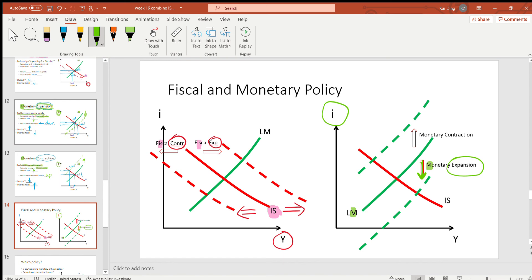When there is a monetary contraction, the LM curve will shift up, meaning there is a higher level of interest. So be careful about the LM curve. Expansion means shifting down, and contraction means shifting up.